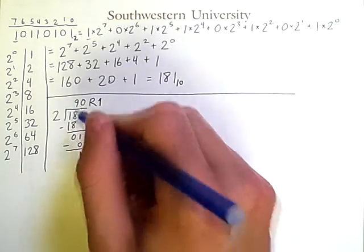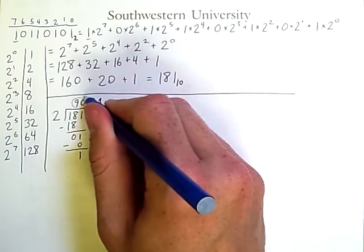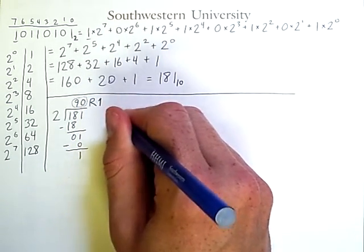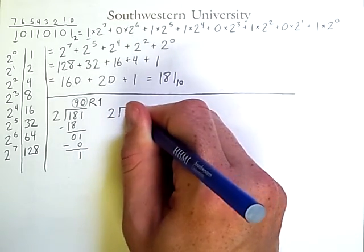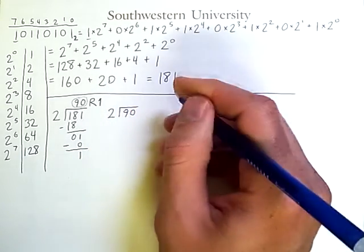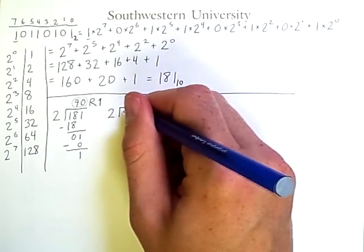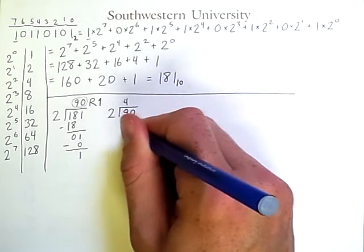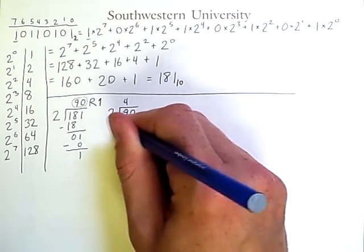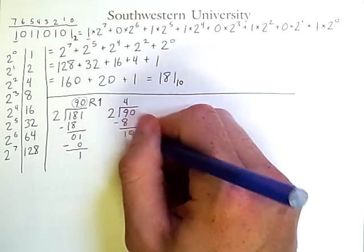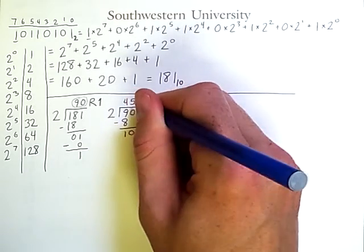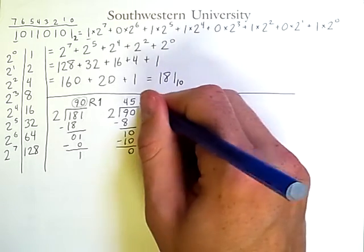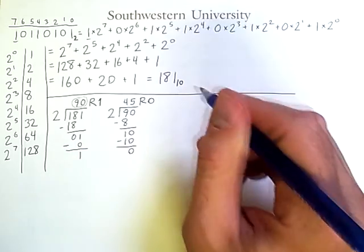So this is the first step. We continue the process by taking the answer to the previous division and then dividing that by 2. So we ask, what about 2 into 90? And we can repeat the process. We get 4. 2 times 4 is 8. 1. 0. We get 10. How many times does 2 fit into 10? 5. 2 times 5 is 10. We subtract. We get 0. Therefore, we have a remainder of 0 in this case.